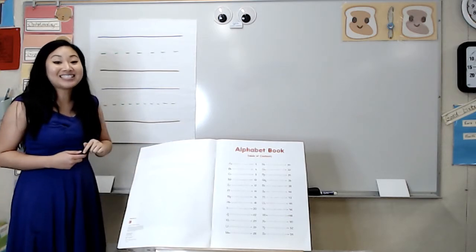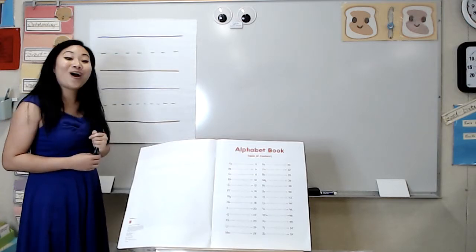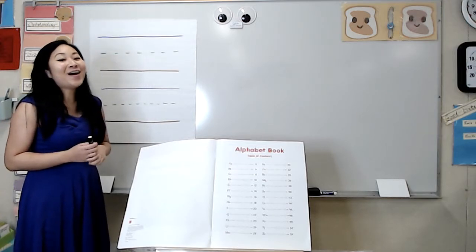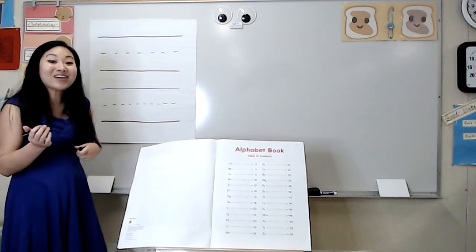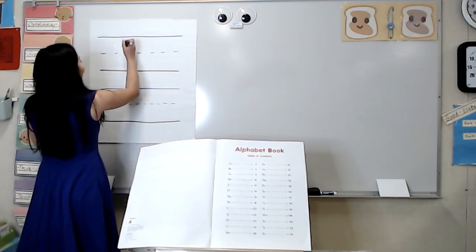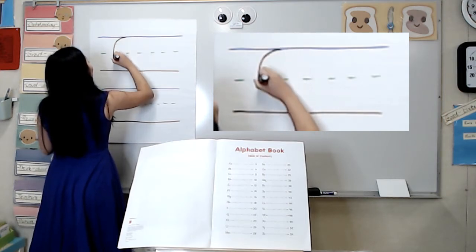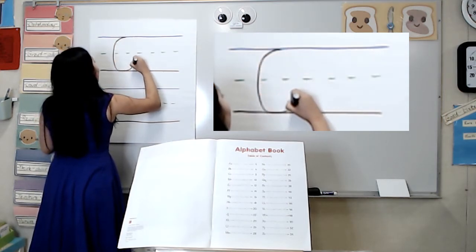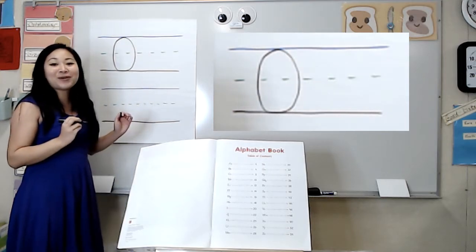So today friends, let's start with our letter O. And O is very simple. I don't know if you know. For the letter O, you start in the sky, curve around, and back up. That is an uppercase O.